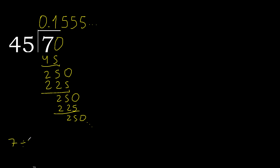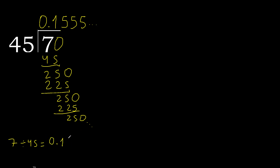7 divided by 45 gives 0.1, with 5 repeating after the point — 5 repeating, like this.